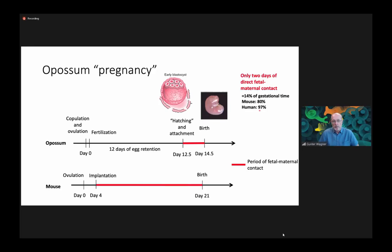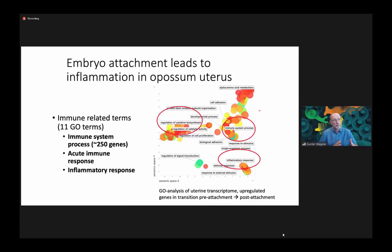We looked at what is happening in the transition before attachment and after attachment, and compared gene expression from the uterus of these animals. A very impressive signal comes from the activation of immune system genes, inflammatory response genes, and regulation of cytokine biogenesis. There are 11 gene ontology terms that get enriched in this transition, and about 250 genes related to immune processes that get activated.